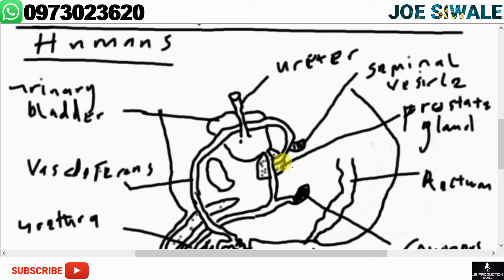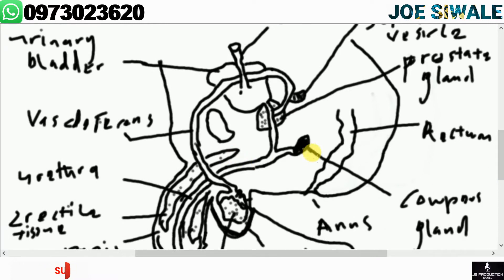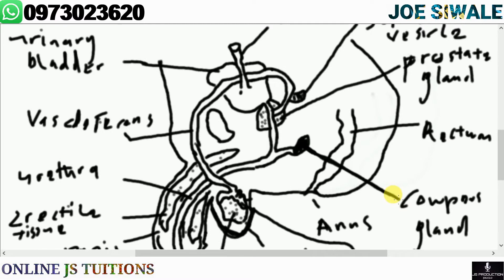The Cowper's gland produces a clear secretion before ejaculation. This secretion cleanses the system before the release of spermatozoa during ejaculation. The secretions of the prostate gland, seminal vesicle, and Cowper's gland together increase the bulk of semen and provide nourishment to the spermatozoa.